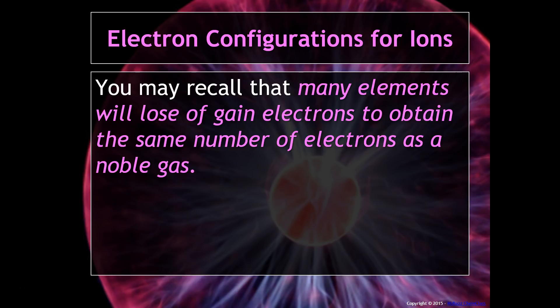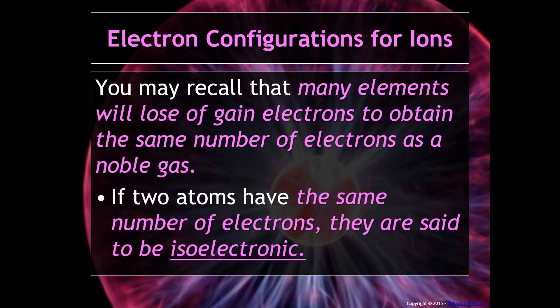You can also write electron configurations for ions. Electrons can be gained or lost, and when that happens an ion is formed. Elements tend to lose or gain enough electrons to have the same number as a noble gas — because those noble gases have a very stable arrangement of electrons. If two atoms have the same number of electrons, they are said to be isoelectronic with each other.